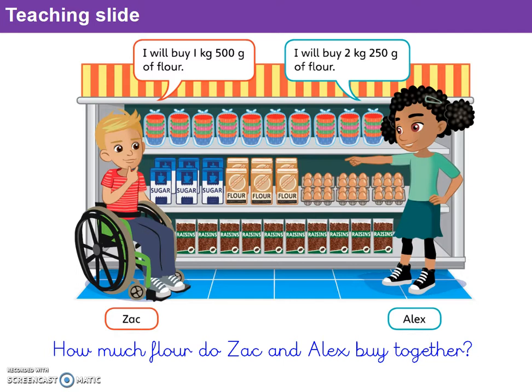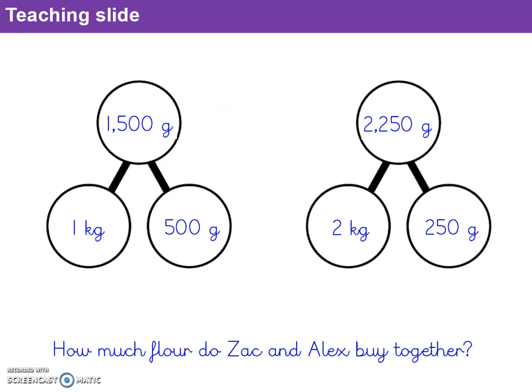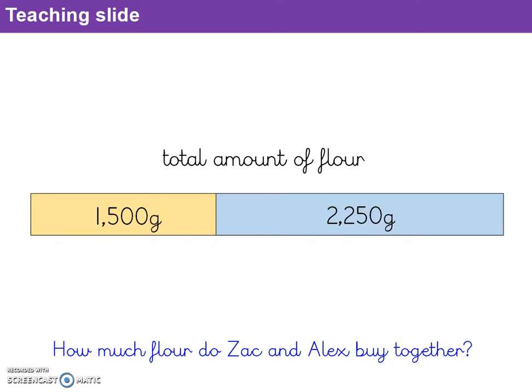For this calculation I've taken the amounts Zach and Alex are both going to buy — one kilogram 500 grams, and two kilograms 250 grams — and converted those into grams alone using part-whole models. Zach bought one kilogram 500 grams, which I've converted into 1,500 grams. Alex bought two kilograms 250 grams, which I've converted into 2,250 grams. I find it easier this way because I'm working with one set of numbers rather than two separate units. Our bar model now shows that 1,500 grams and 2,250 grams gives us the total amount of flour.